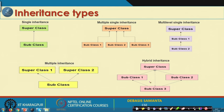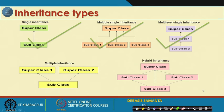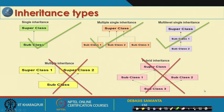There is also the concept of multiple inheritance, where a class inherits from two classes. A hybrid example combines both single and multiple inheritance. However, in Java, only single inheritance, multiple single inheritance, and multi-level single inheritance are possible. Java does not support multiple inheritance or hybrid inheritance.